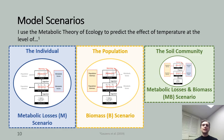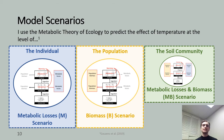To test my hypotheses and predictions, I used three model scenarios. With the metabolic losses, or M scenario, I modeled the metabolic rate as a function of temperature to test the effect of warming on individuals. With the biomass, or B scenario, I modeled biomass as a function of temperature to test the effect of warming on populations. With the metabolic losses and biomass, or MB scenario, I modeled both metabolic rate and biomass as a function of temperature to test the effect of warming on the whole soil community. The MB scenario is the combination of the M and B model scenarios.